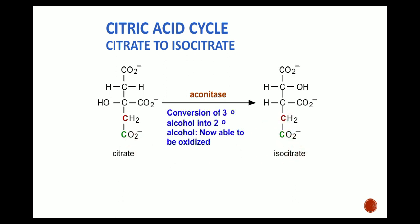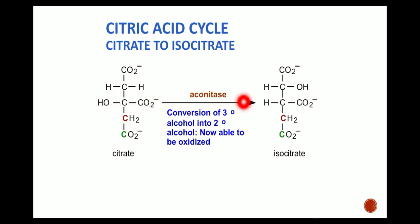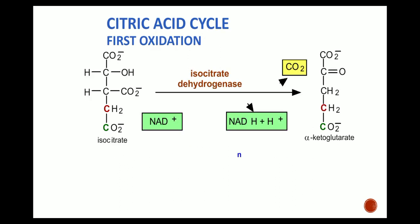Citrate is converted into isocitrate — this is a conversion of a tertiary alcohol into a secondary alcohol. The OH group is attached to the tertiary carbon in citrate, and in isocitrate the OH group is attached to the secondary carbon. The enzyme acting here is aconitase.